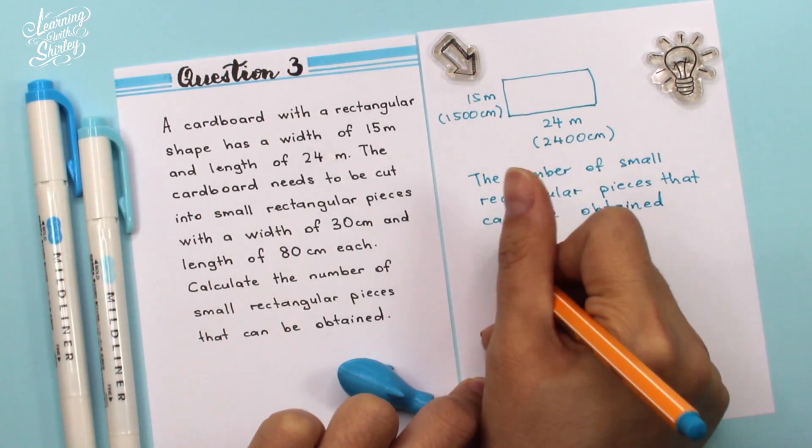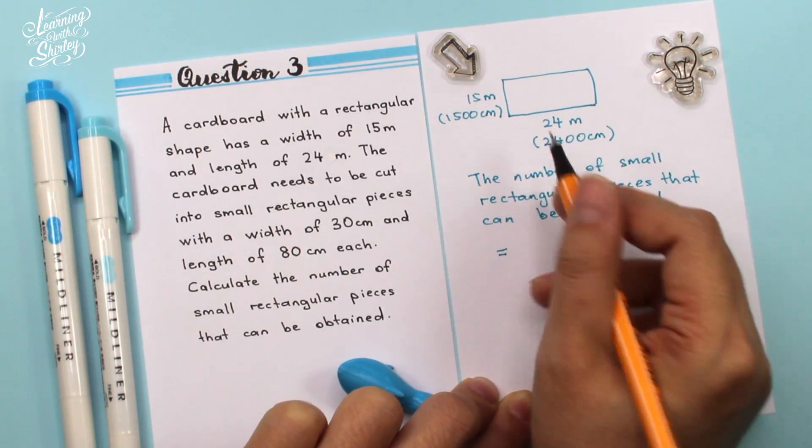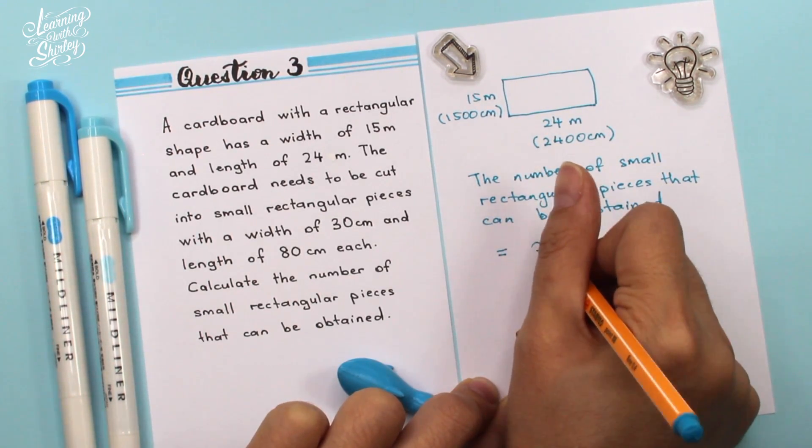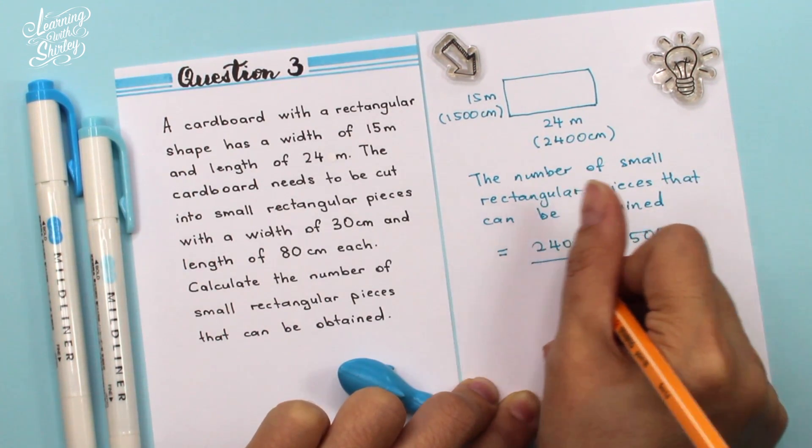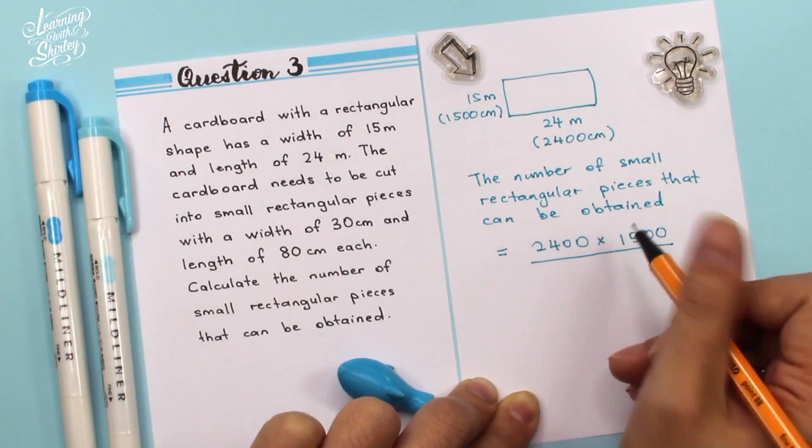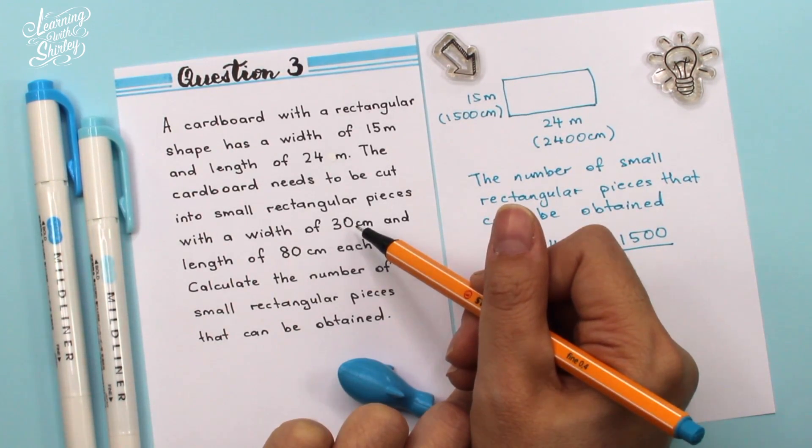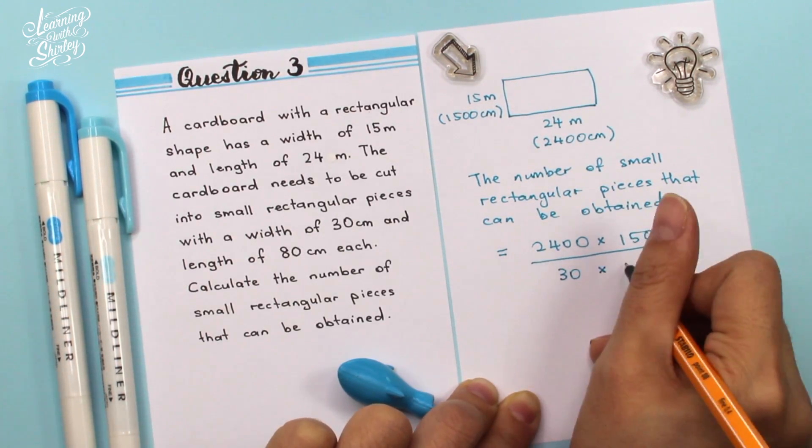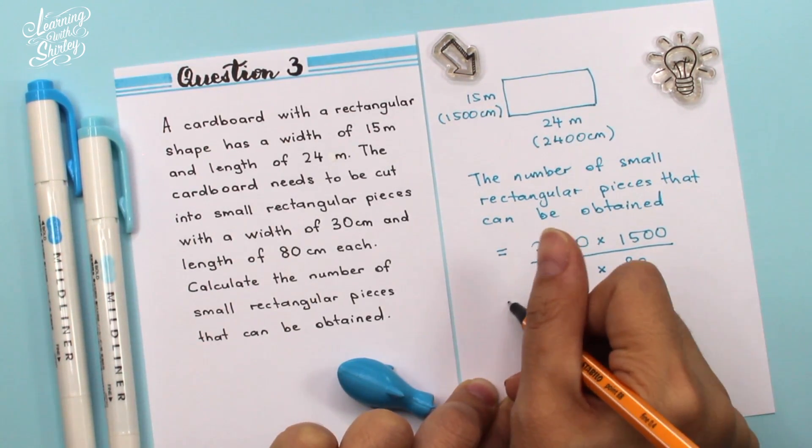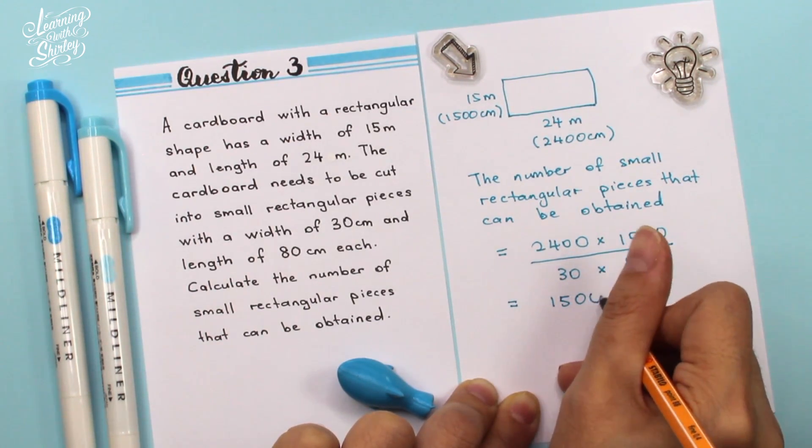To find the number of small rectangular pieces that can be obtained, I'm going to use the area of the big rectangle, which is 2400 times 1500 divided by the area of the small rectangular pieces, which is 30 cm by 80 cm. So 30 times 80. And then I will get 1500 pieces.